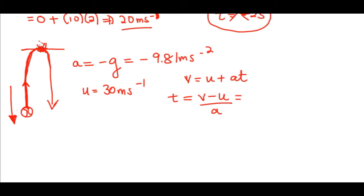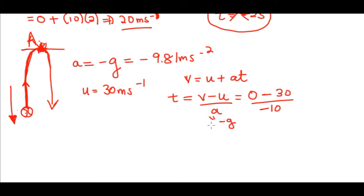Say we throw the ball upward with an initial velocity u = 30 meters per second. We want to know how long it takes to reach the top. Using v = u + at, the time t = (v − u) / a. At the top, the final velocity v = 0. Since the ball moves upward against gravity, acceleration a = −10 m/s². So t = (0 − 30) / (−10) = 3 seconds to reach the top.